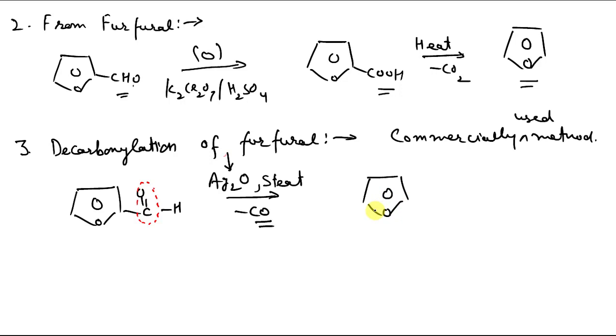So this is again a method by which we can produce furan from furfural. And this furfural you can see we have done two methods in which furfural is used for the production of furan. So furfural can easily be obtained by treatment of pentoses with hydrochloric acid. Let us see.